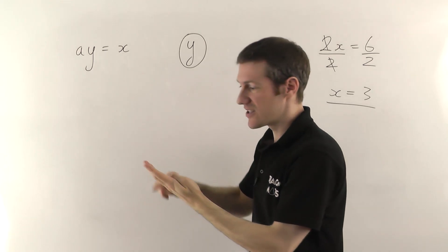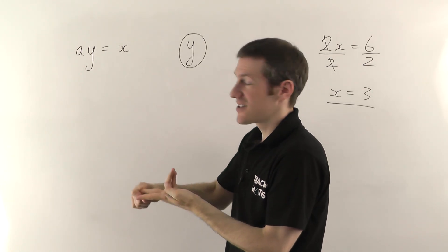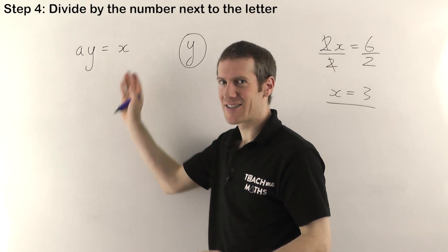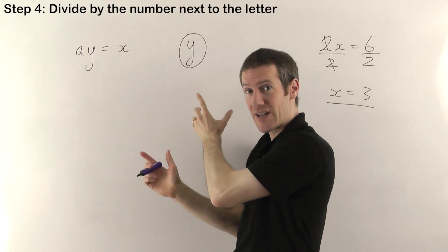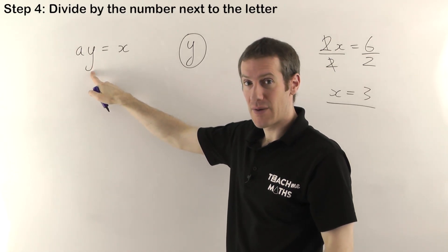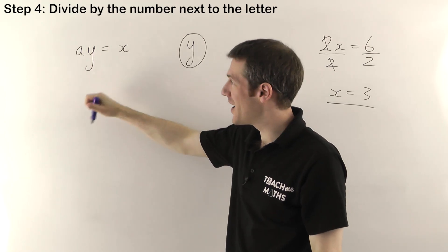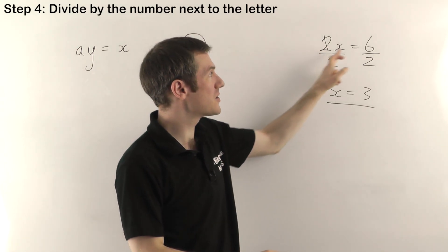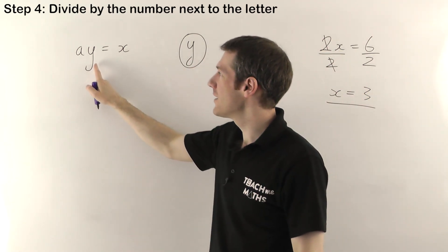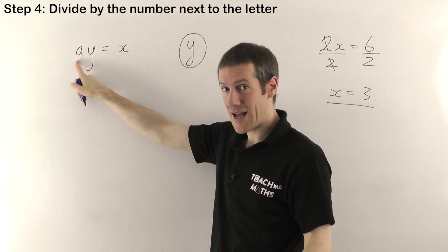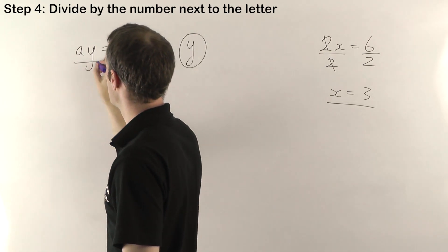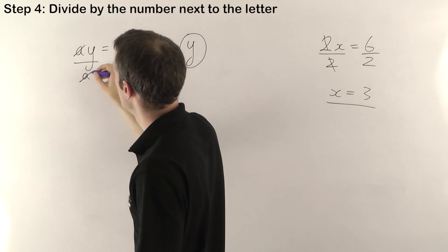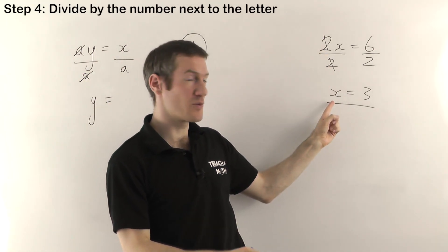When we come to the final step, let's quickly check through the others first: no fractions, no brackets, no added or subtracted terms. So the last step is divide by the number next to the letter. Which letter? There are three letters, but it's the one we care about — y. They'll always tell you in the question. The number next to y is a, and remember a is a number. So we divide both sides by a, just like we divided by 2 in the equation example. The a's will cancel and leave y by itself.